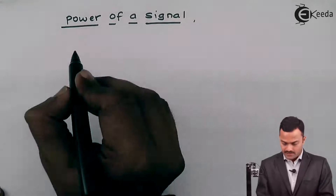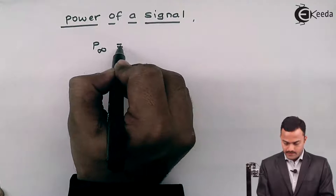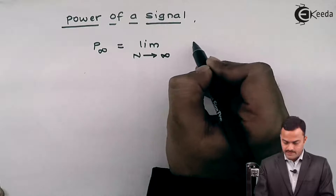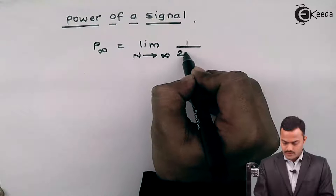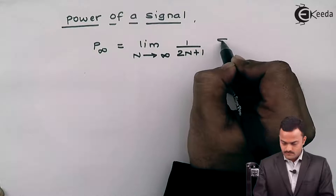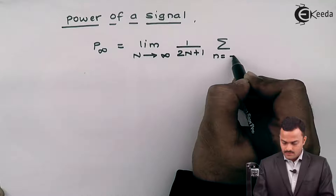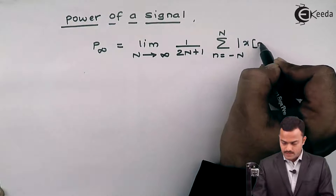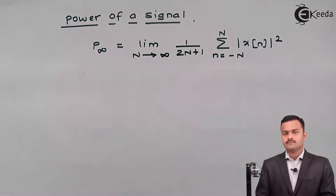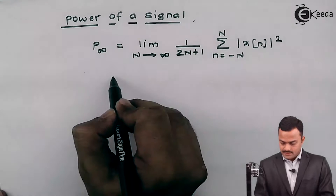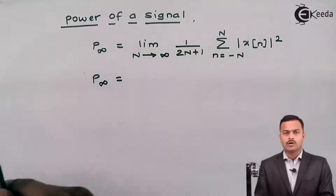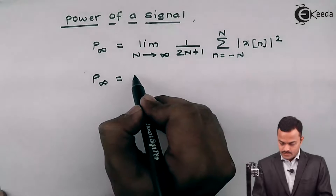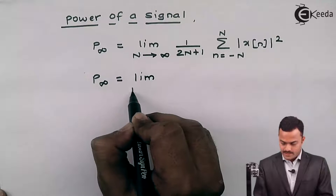For discrete time, the formula for power is: P∞ = limit as N tends to infinity of 1/(2N+1) times the summation from n = -N to +N of |x(n)|². Since this is a unit step signal that exists only from 0 to N, I will get P∞ as limit N tends to infinity of 1/(2N+1).